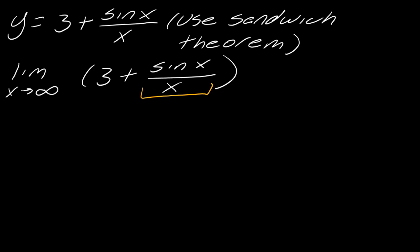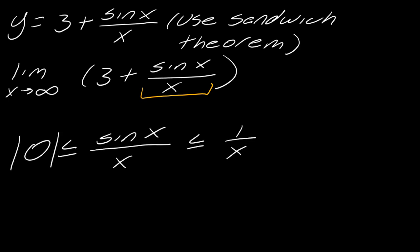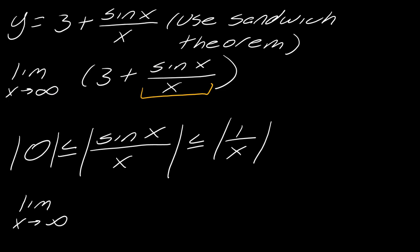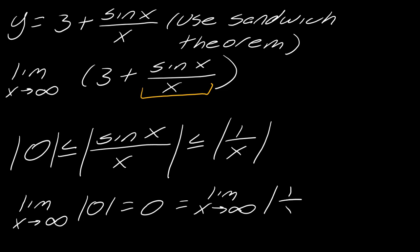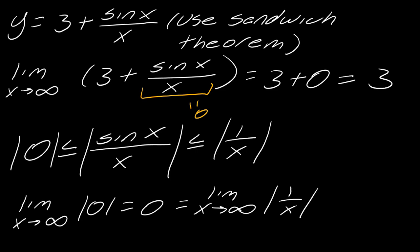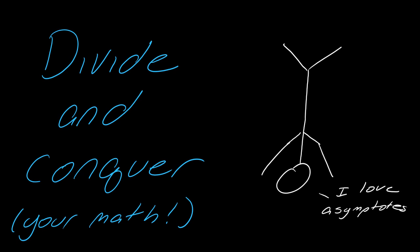Let's think of what we can sandwich sine x over x in between. We can sandwich it within an inequality we know will work. Taking the limit as x approaches infinity of 0 equals 0, and the limit as x approaches infinity of 1 over x also equals 0. Because sine x over x is sandwiched between those two, by the sandwich theorem this part also equals 0. So ultimately this limit is 3 plus 0, giving us an answer of 3. Sometimes finding horizontal asymptotes requires tools like the sandwich theorem — those can be tricky ones.